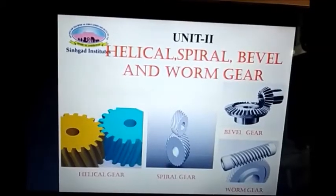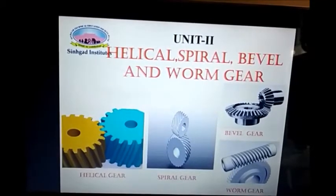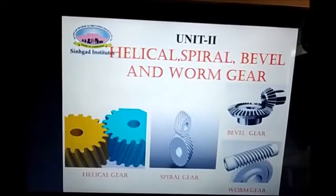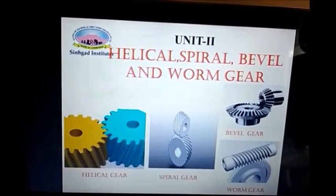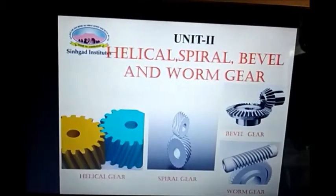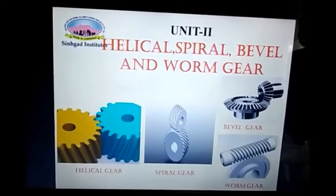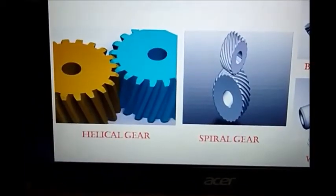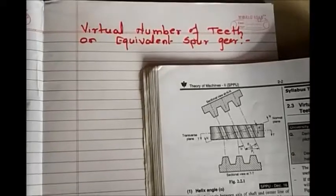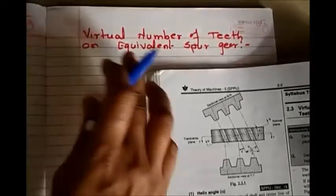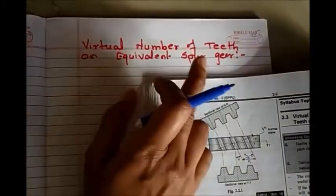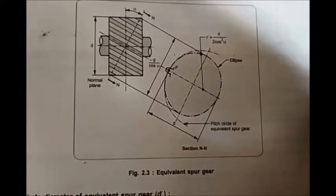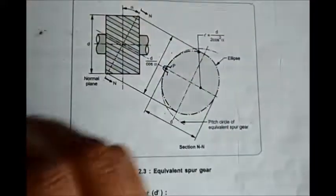As we finished Unit 1 on spur gears, let's start Unit 2: helical gear, spiral gear, bevel gear, worm and worm wheel. Today we are going to start with helical gear, with the very first concept — the virtual number of teeth on an equivalent spur gear.